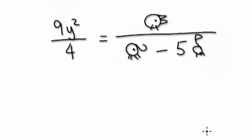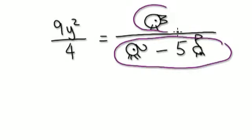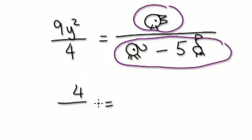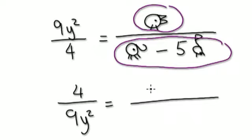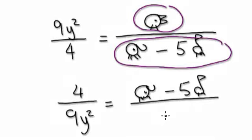Now comes the hard part. Visualize this as one bubble and this as another bubble. We want to make the giraffe the subject, but it's at the bottom — we can't really kill it off. So take the reciprocal of both sides. This side would be four over nine y squared, and this side would be elephant take away five giraffes, and at the bottom would be chicken.